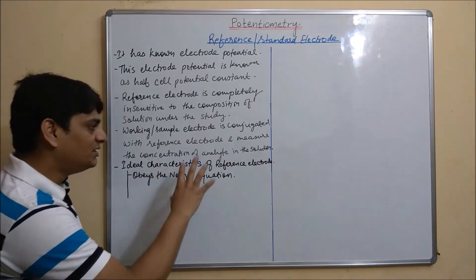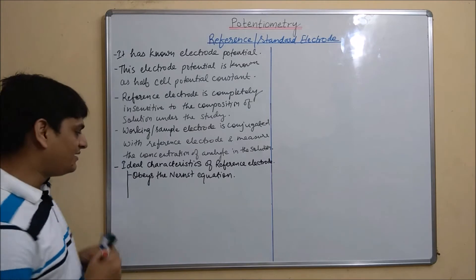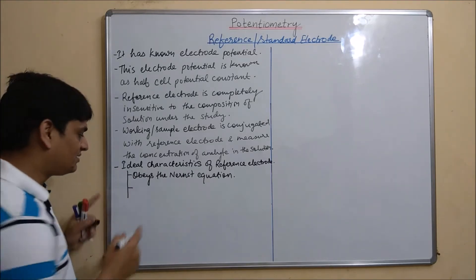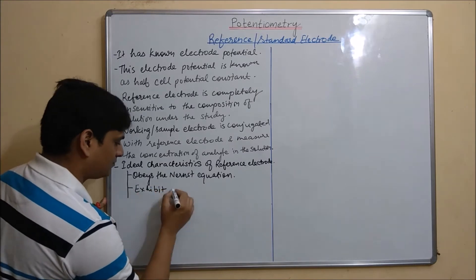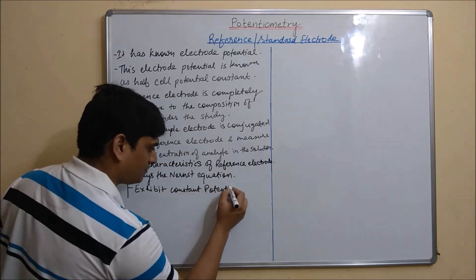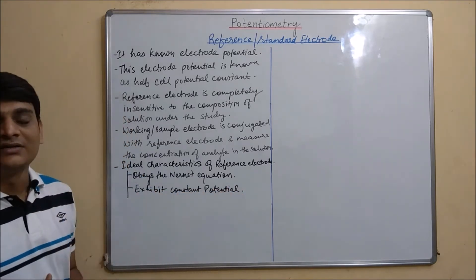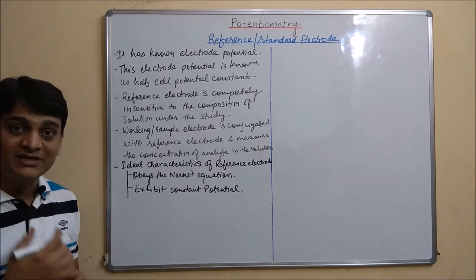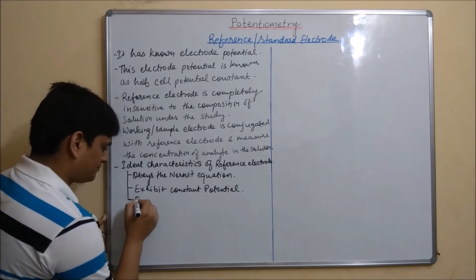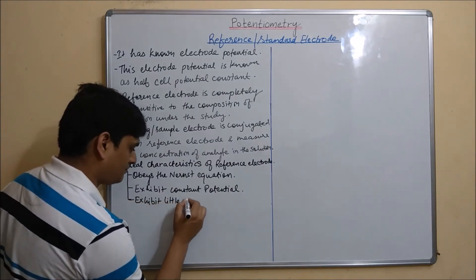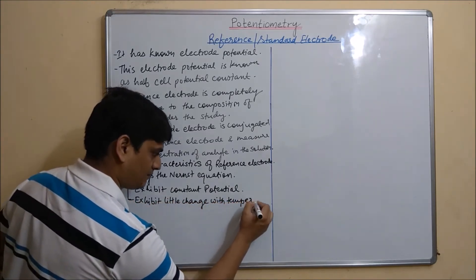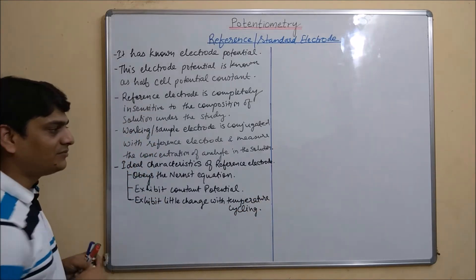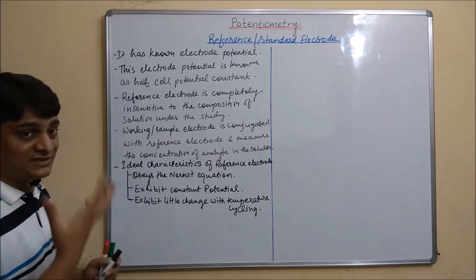The second characteristic of this reference electrode is that it exhibits constant potential throughout the analysis. The third characteristic of the reference electrode is that it exhibits little change with temperature cycling. These are the ideal characteristics of the reference electrode under standard conditions.